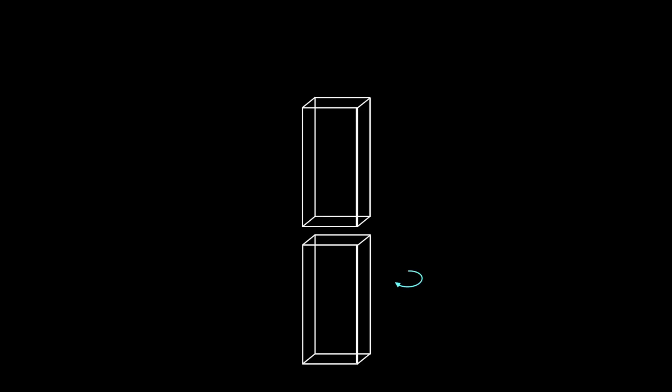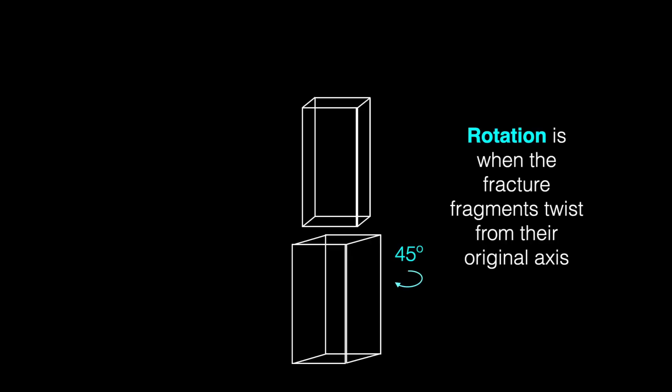So this is the same diagram of the fractured humerus, but this time I want you to imagine it in 3D. Pay attention to the illustration as I advance the slides. Rotation is when the fracture fragments twist from their original axis.